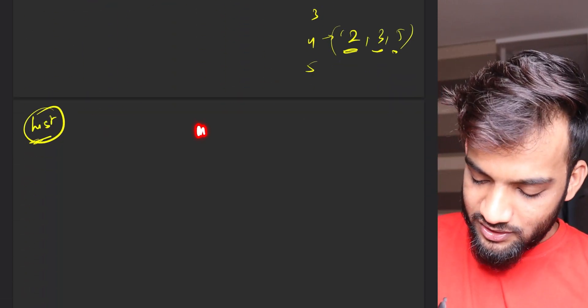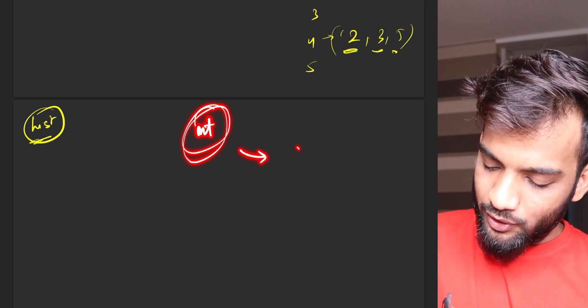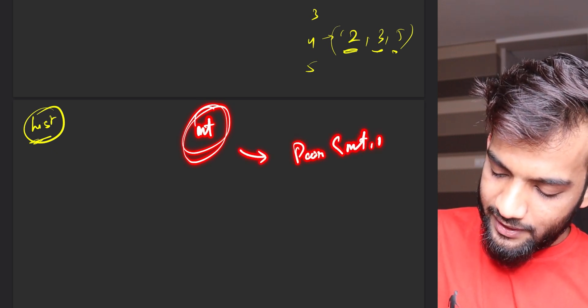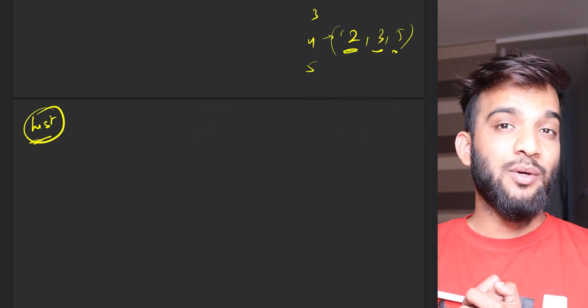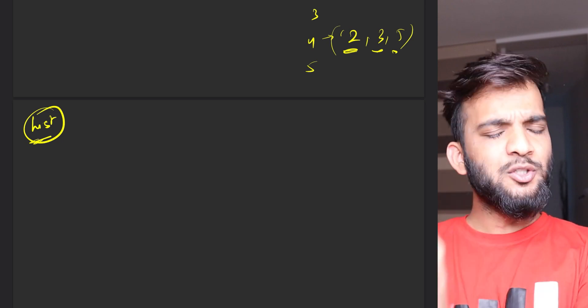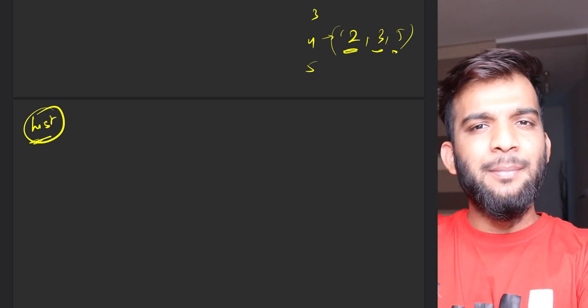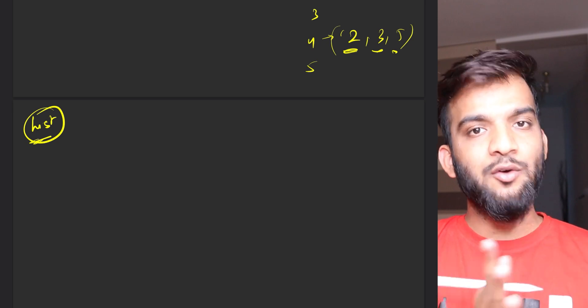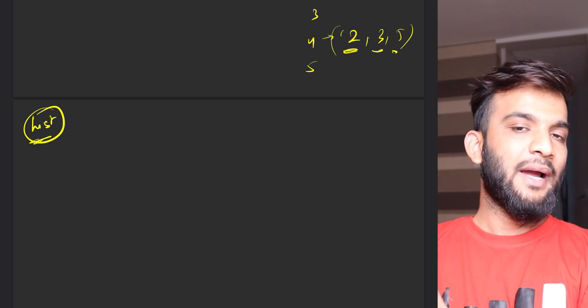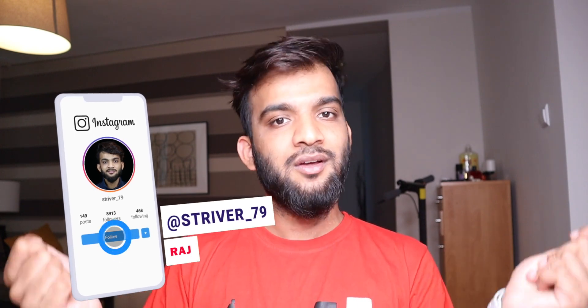When defining the list for weighted graphs, instead of ArrayList of Integer, you define an ArrayList of Pair<Integer, Integer> to store the weights as well. The full implementation will be shown when we solve a problem on weighted graphs. I hope you've understood the entire implementation of graphs in Java. If you did, please like this video, subscribe to the channel, and check out the DP series and the sheet linked in the description.